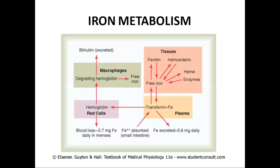Now, iron metabolism. Within the tissues, free iron is converted into the ferritin form, which is the storage form. This reaction is reversible — whenever free iron is required, ferritin will be converted back into iron. Iron is also stored in the form of hemosiderin, and this reaction is also reversible. Iron will be acted upon by heme enzymes for the formation of heme, and by the breakdown of heme, free iron is released.